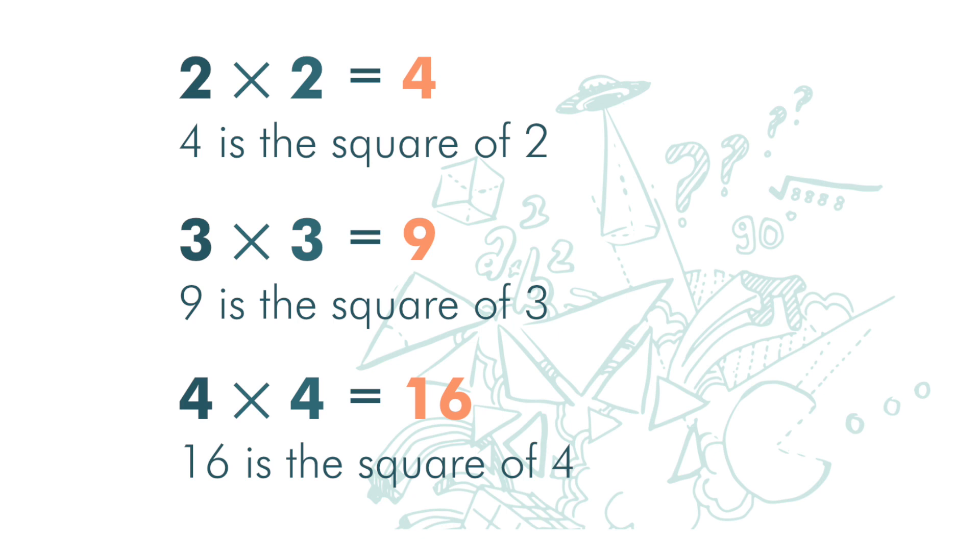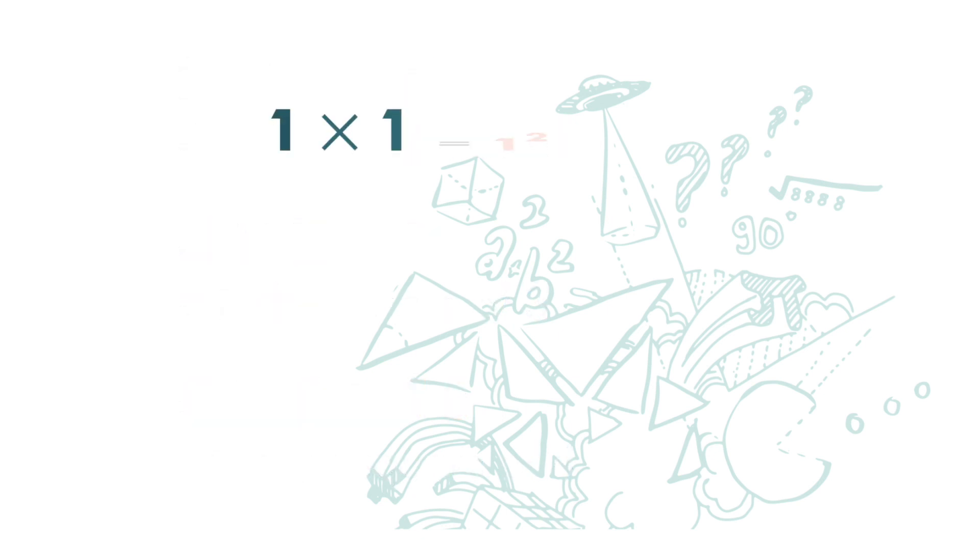1 times 1 can be written with a little 2 on the top right hand corner. 2 times 2 can be written with a little 2 on the top right hand corner. 3 times 3 can be written the same way, again a little 2 on the top right hand corner. 4 times 4 can be written as this, again a little 2 on the top right hand corner.